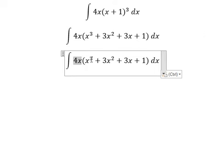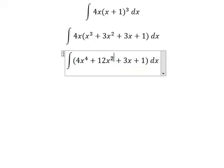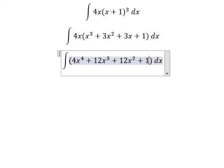Now multiply 4x by each of these terms. We will have 4x to the power of 4, 12x to the power of 3, 12x to the power of 2, and 4x.